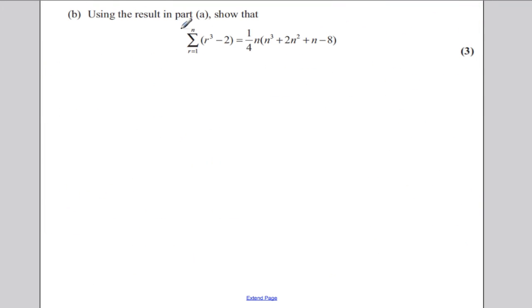Part B says, using your result in part A, show that the following is true. Well, what you're supposed to do here is not do an induction. You're just supposed to split this sum up from the sum from 1 to N of R cubed, subtract two lots of the sum from R equals 1 to N of 1. Just splitting this sum up here. Now, from part A, you know what this is. This is a quarter N squared times N plus 1 squared. And you should know that the sum of 1 between 1 and N is N. So this here must be subtract 2N.